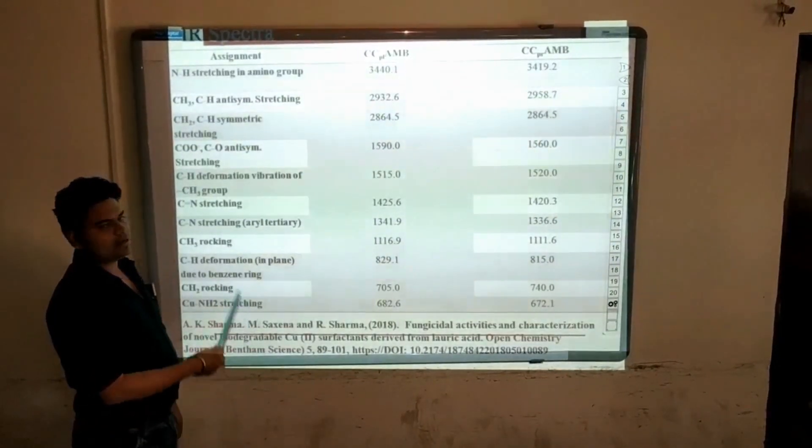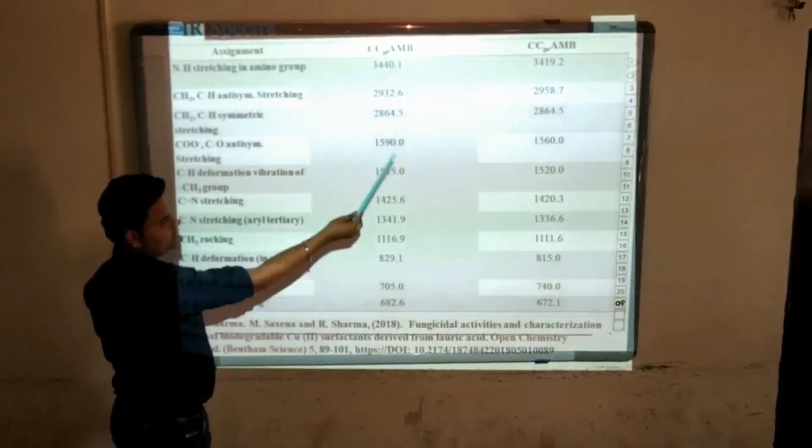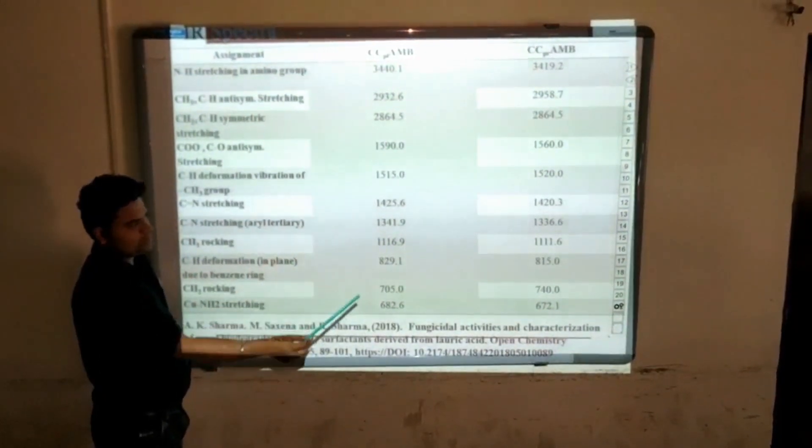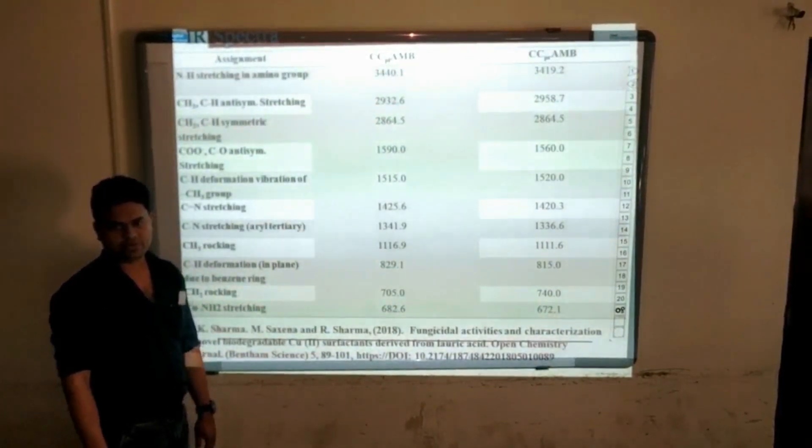Also, we characterize our complexes by IR and ESR spectra. So these are the results of IR spectra and as we can see here, we obtained different peaks in different functional group regions which confirm us that the complexation was done between the ligand and copper surfactant.